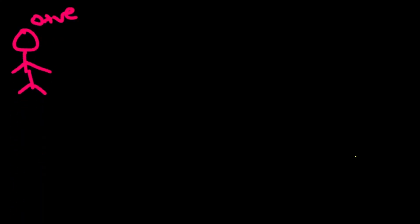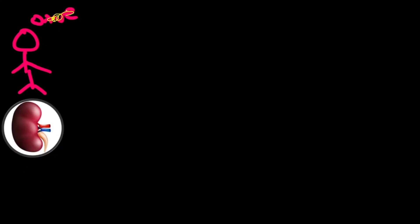Let's see which blood groups each of the four types can accept a kidney from. An O blood group patient can only accept a kidney from an O blood group donor — they cannot accept from A, B, or AB donors.